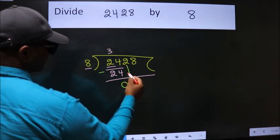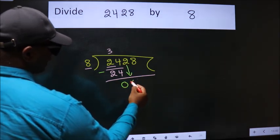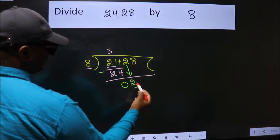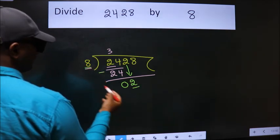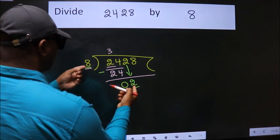After this, bring down the beside number. So 2 down. Here we have 2, here 8. 2 is smaller than 8.